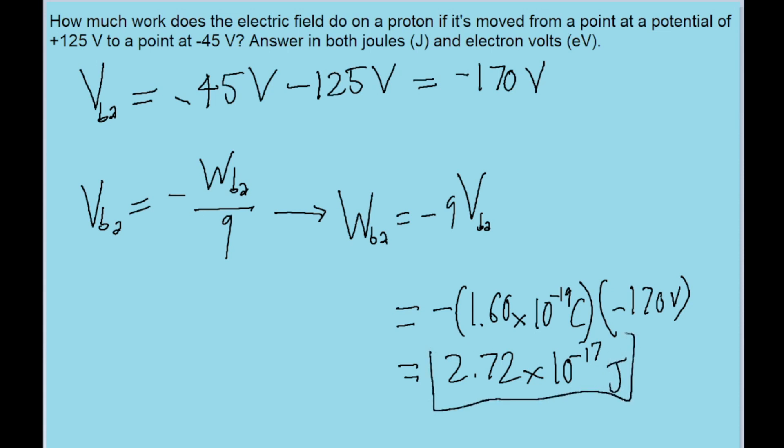And so that is the amount of work done by the electric field on the proton in joules. The problem also mentions that we want to find this answer in electron volts. And using electron volts doesn't change the process at all, but it does mean that instead of using coulombs for the charge, we're just going to use units of E, of electron units for the charge.